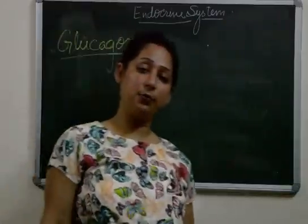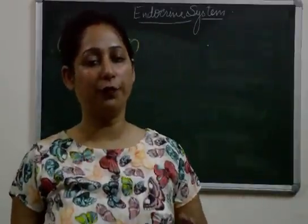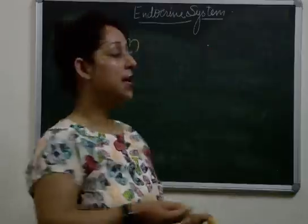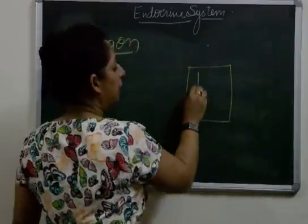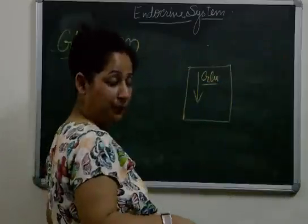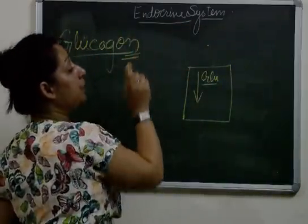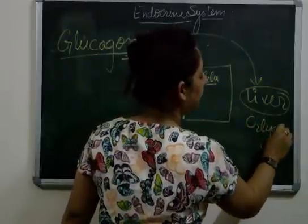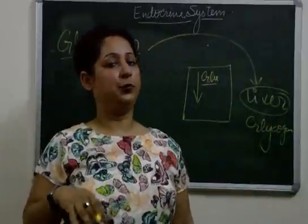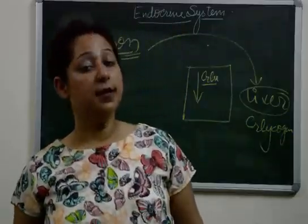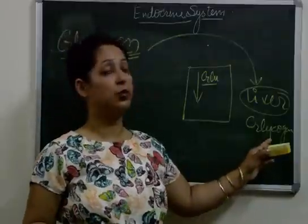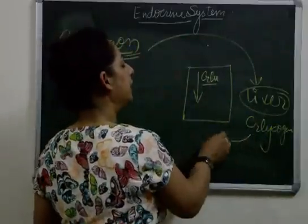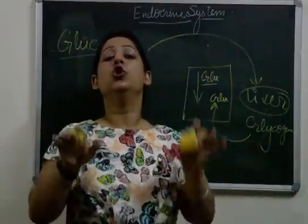Glucagon is the hormone that helps convert glycogen — the stored sugar in our body — back into glucose. Suppose the level of sugar or glucose in the human body falls down. When that happens, glucagon is secreted, which stimulates the liver to convert stored glycogen back into glucose. When we eat food, glucose is produced; unused glucose is converted into glycogen by the liver. Whenever the body needs glucose, glucagon stimulates the liver to convert that glycogen back into glucose.